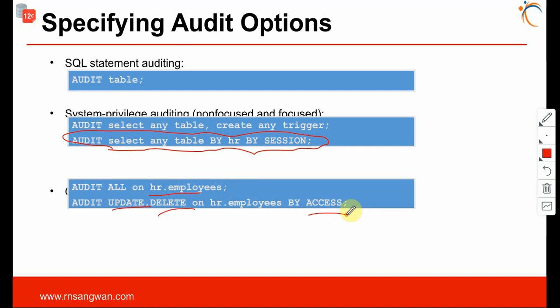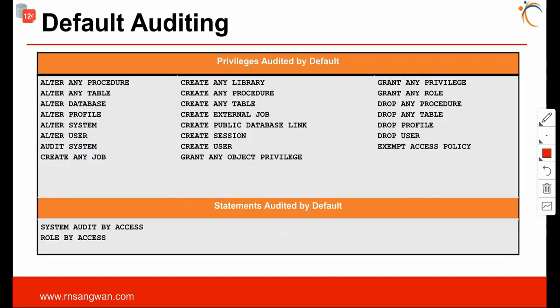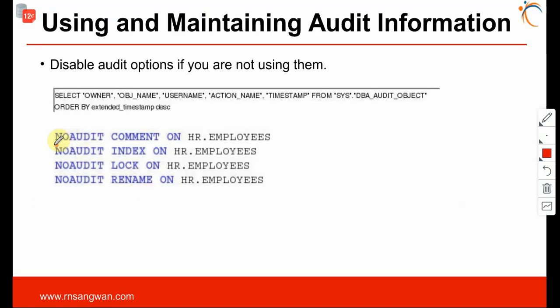There are many such audit options — these are just some to get started. There is a huge set of options: ALTER ANY PROCEDURE, ALTER ANY TABLE, ALTER DATABASE, ALTER PROFILE, ALTER SYSTEM — these are privileges audited by default. There are also statements audited by default. If you want to disable them, you can use the NO AUDIT statement to disable specific audit options.